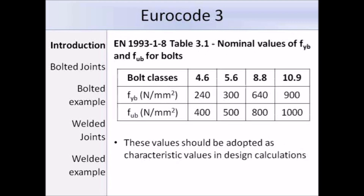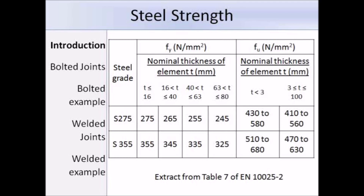This is Table 3.1 from Eurocode 3 Part 1-8, and it gives the nominal values of the yield and ultimate strength of the bolts, so we will be referring to this table for joint design that involves bolts. This is also an extract from the product standards, which gives the yield and ultimate tensile strength of rolled steel sections, so we might need to refer to this table to get the strength values for different elements.